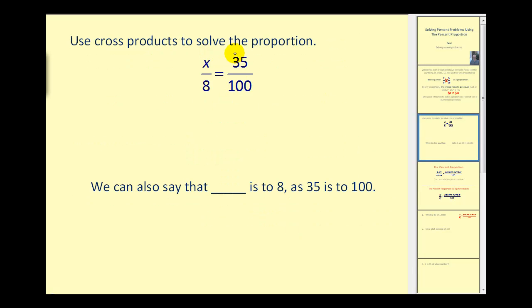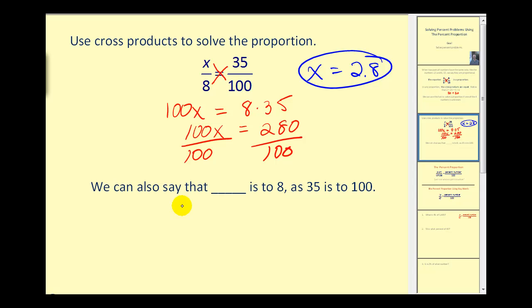For example, if we have this proportion and we're asked to solve for x, we can use the fact that 100x must equal 8 times 35. We have an equation that states 100x equals 280. Now we can solve for x by dividing by 100 to obtain the value of x, which is 2.8. We can say that 2.8 is to 8 as 35 is to 100.